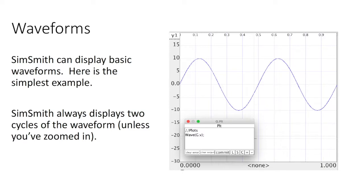Here's a typical waveform. It's a sine wave coming out of the generator. It is just the fundamental frequency. Here is the instruction that I use to plot a waveform. I simply say wave and the name of the signal. And SimSmith always displays two full wavelengths of the fundamental.